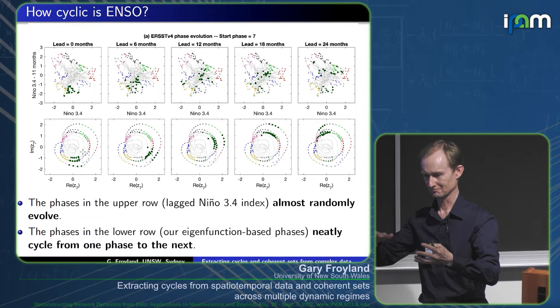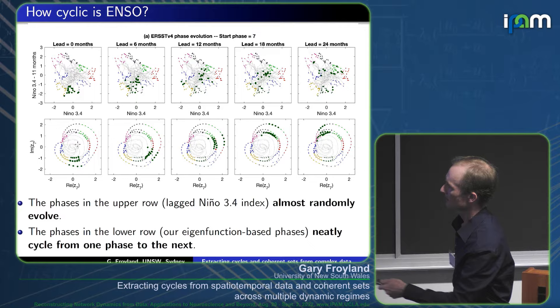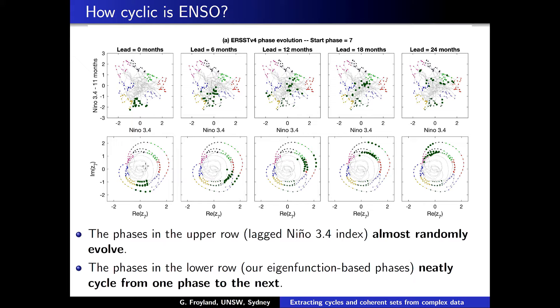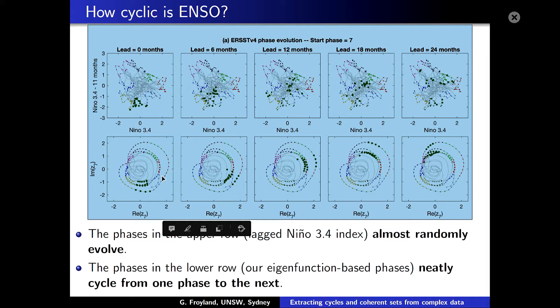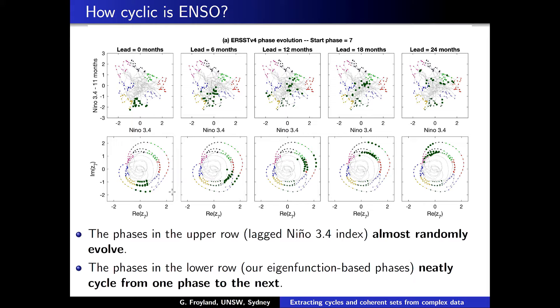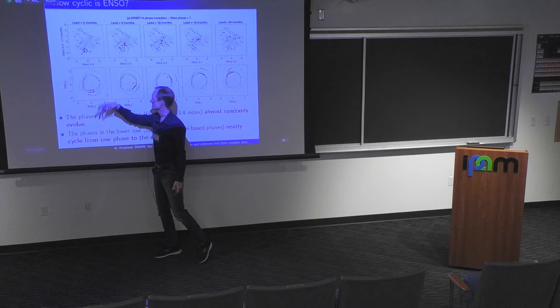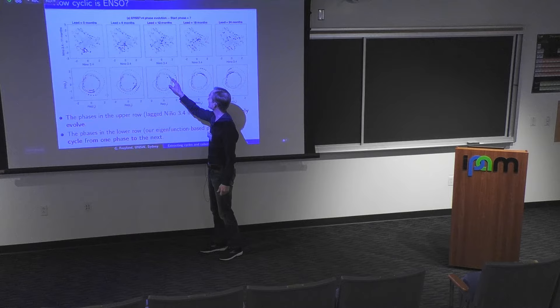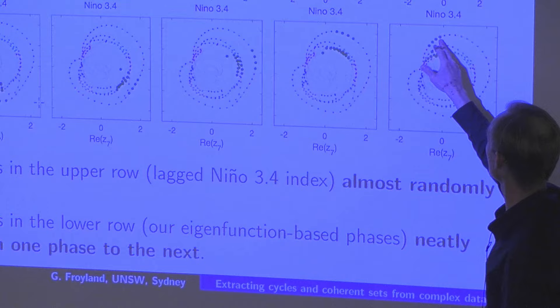Climatologists typically break ENSO into eight phases of six months each — so we have eight equiangular phases colored differently around the cycle. If this behaves in a self-consistent cyclic way, advancing six months should move one group of points onto the next phase. And indeed they do — each group advances phase to phase approximately. This shows good self-consistency.